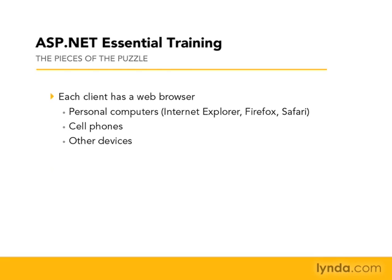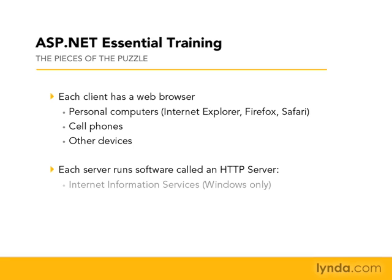The web server is a computer that runs a piece of software called the HTTP server. There are two major HTTP server products on the market: Microsoft's Internet Information Services, also known as IIS, which is only available for the Windows platform, and Apache, which is a free HTTP server product developed and provided by the Apache Foundation.